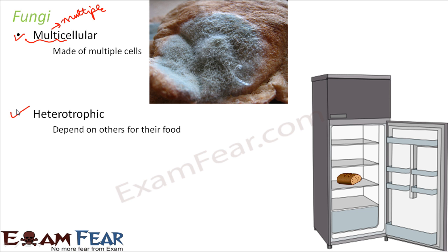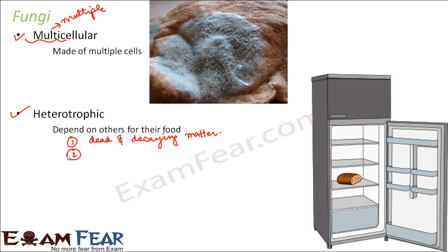What kind of food do they actually eat? They can feed on dead and decaying matter — this is one type of food for them. Dead and decaying matter refers to plant remains or animal remains after they die. So basically, fungi depend on other organisms like plants and animals so that when they die, fungi can feed upon their dead and decaying matter.